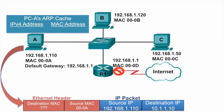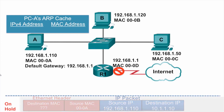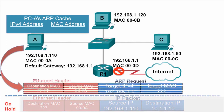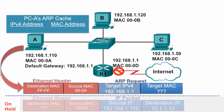PCA checks its ARP cache for that IP address 192.168.1.1, and there's no entry with a MAC address. So it puts the packet on hold and creates an ARP request. The ARP request has the IP address of the router 192.168.1.1, and the target MAC address is unknown. The destination MAC address of an ARP request is a broadcast, so it will be sent to the switch, and the switch will flood it out all ports except for the incoming port.